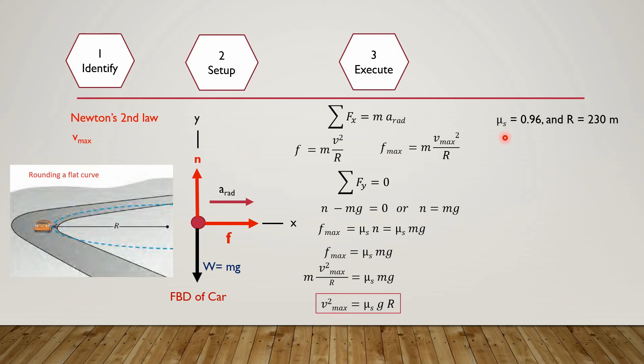We are given the value of mu s as 0.96 and the value of R as 230 meters. After putting the values of mu s and R, we get the value of v maximum as 47 meters per second, or 170 kilometers per hour, or 100 miles per hour.